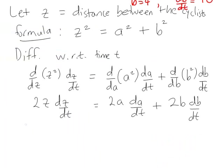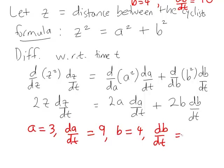So let's summarise this information. A is equal to three. dA/dT is equal to nine. B is equal to four. dB/dT is equal to negative ten. That's going to help with the formula. That gives us everything on the right hand side. What are we actually trying to find? Well, we're interested in the rate at which the distance between the cyclists was changing at that time. So we were wanting dZ/dT.